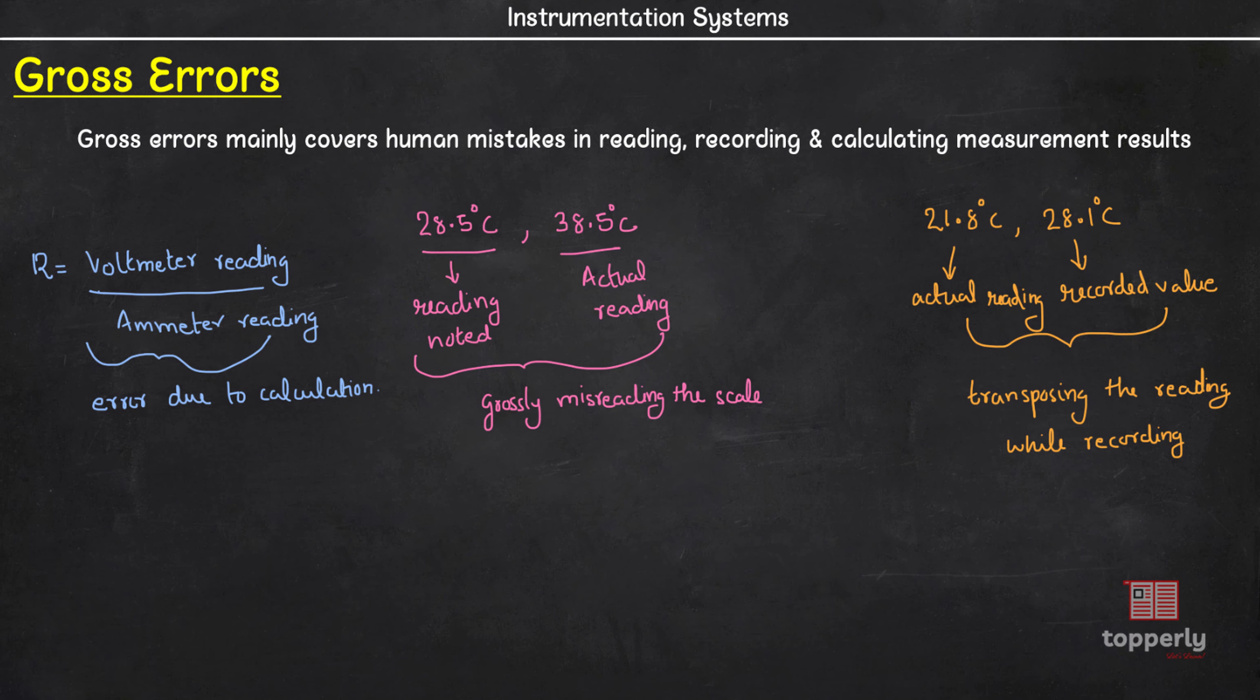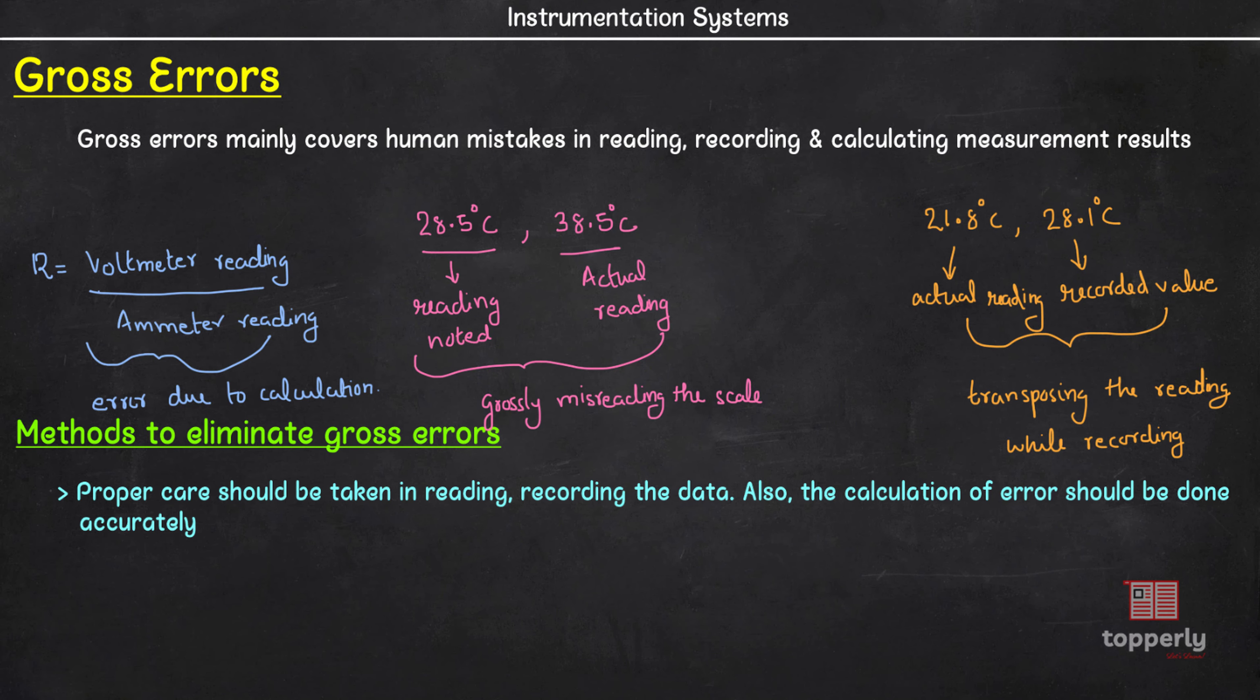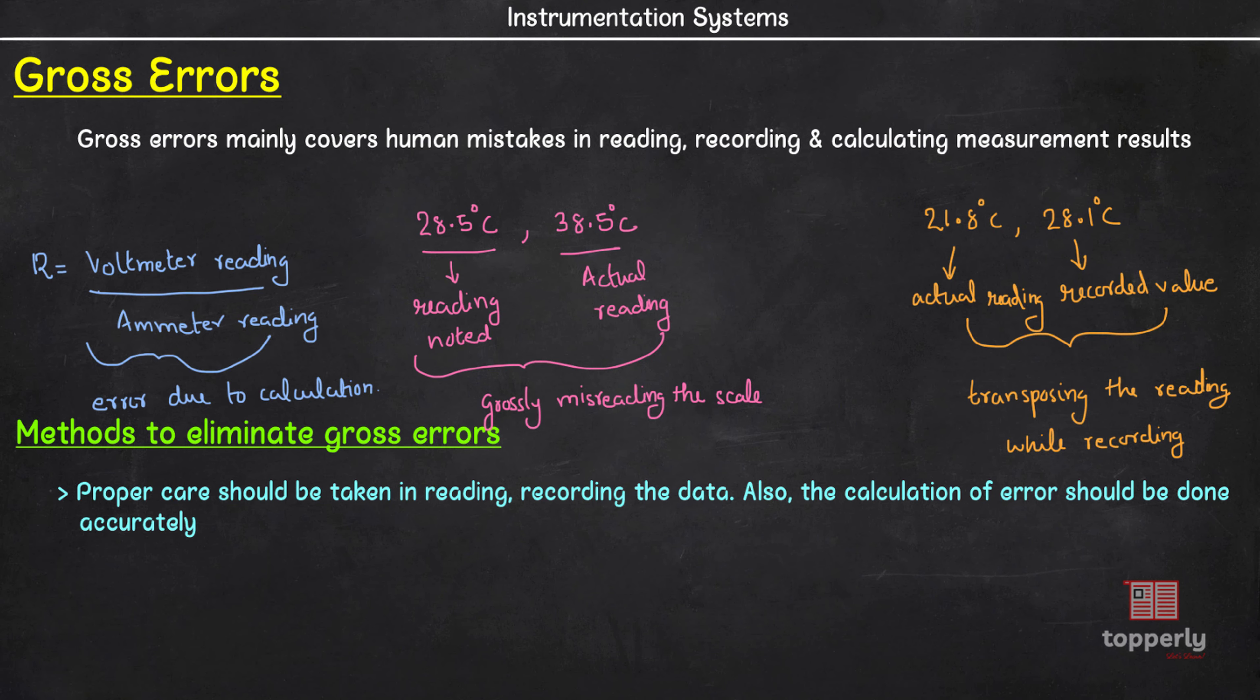The problem with gross error is that we can never completely eliminate them. As long as human beings are involved in measurement, some gross errors will be definitely committed. Some gross errors are easily detected while others may be very difficult to detect. Gross errors can be of any amount and due to this reason their mathematical analysis is impossible. Although complete elimination of gross errors is impossible, we can adopt measures to eliminate their occurrences. One way is to take great care while taking the reading and recording the data. Another way is by taking multiple readings, preferably by different experimenters.